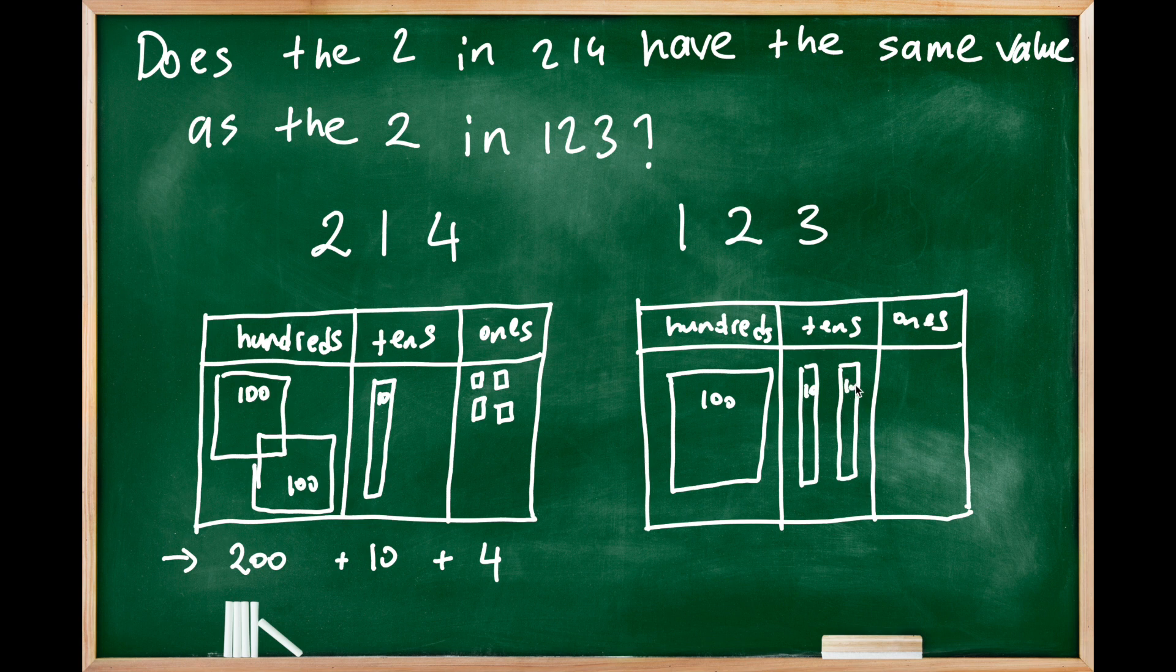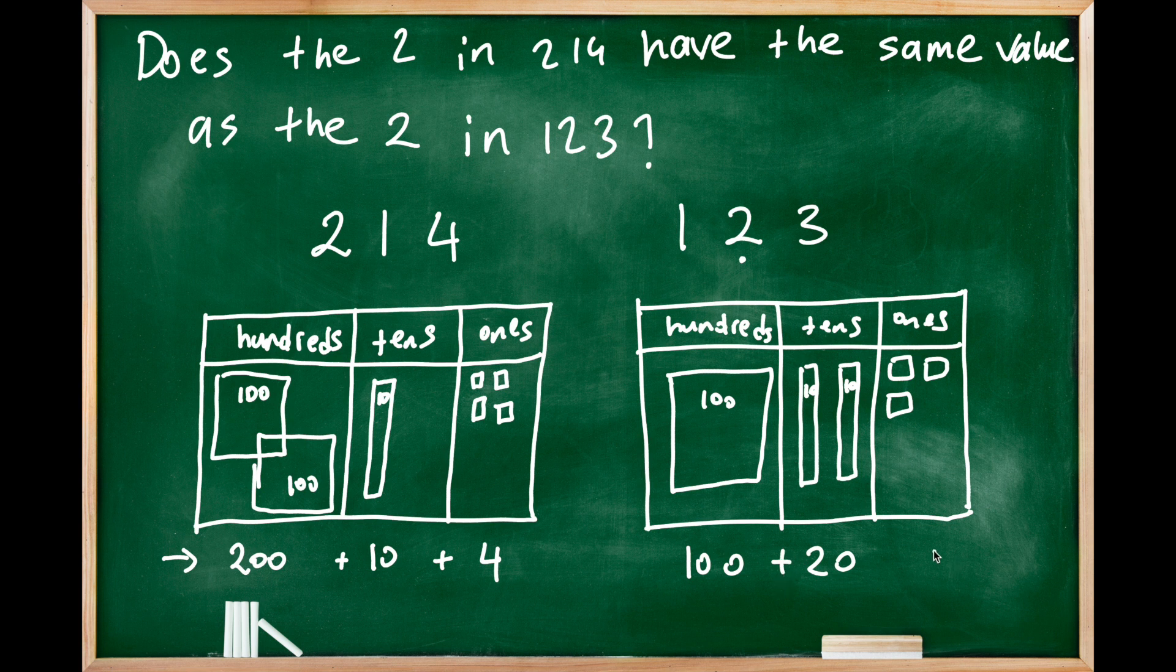So this one is a hundred, these rods are tens, and I have three ones. To compare the values, as you see, the 2 represents—this 2 represents in this number 20. Here we have a hundred in the hundred place plus three in the ones place.